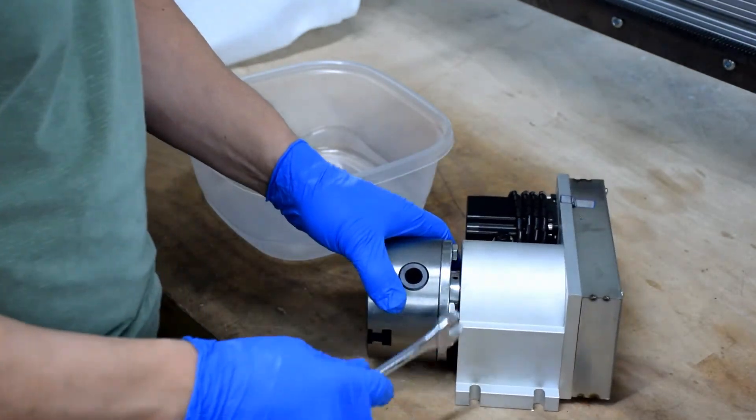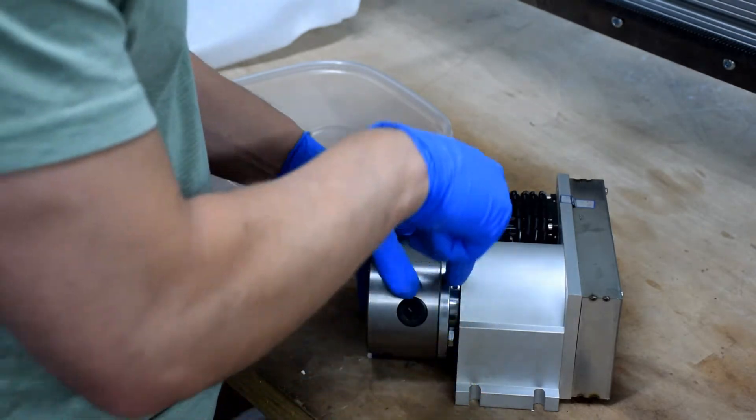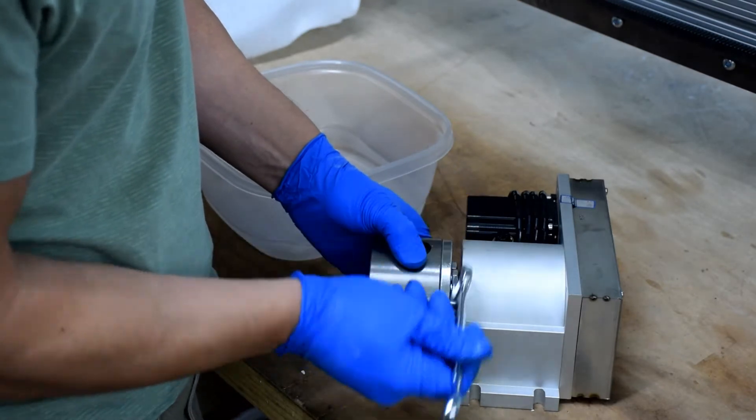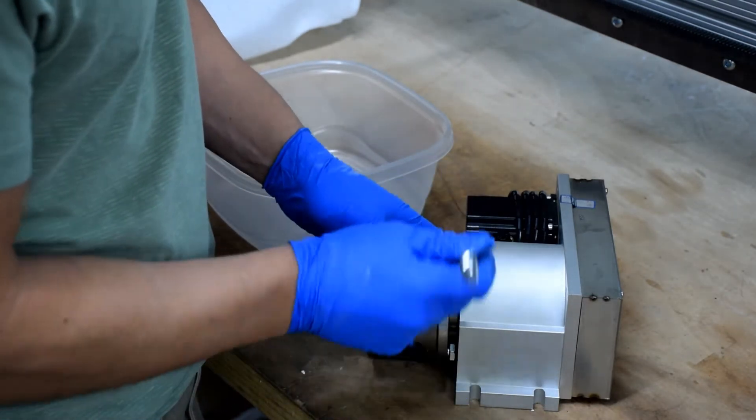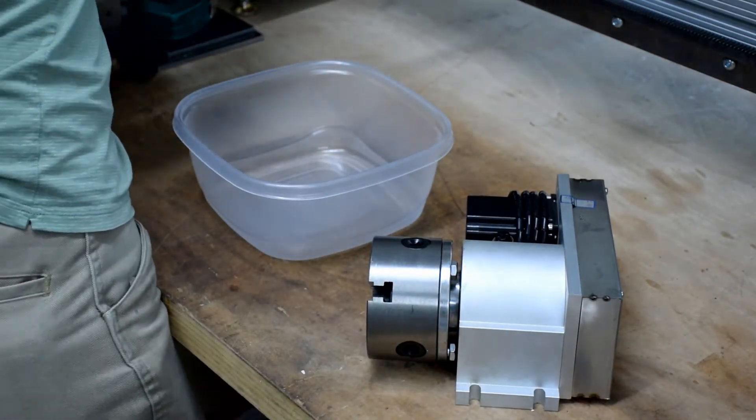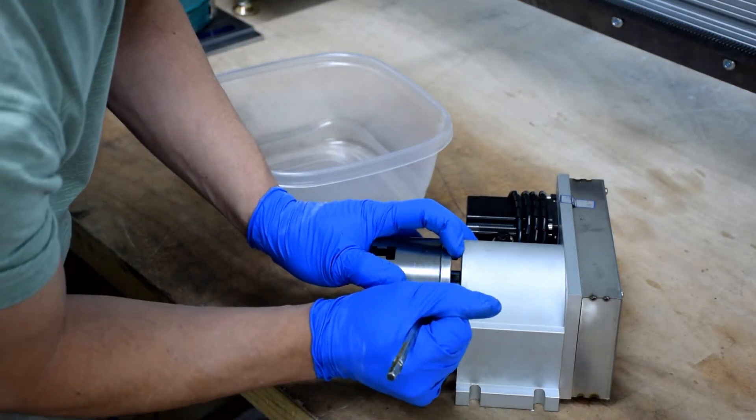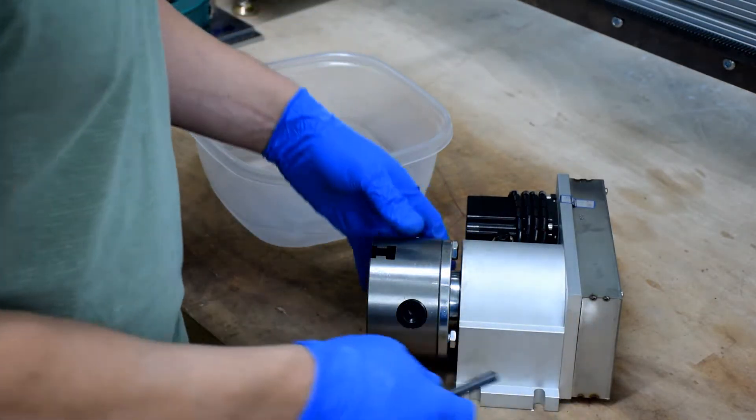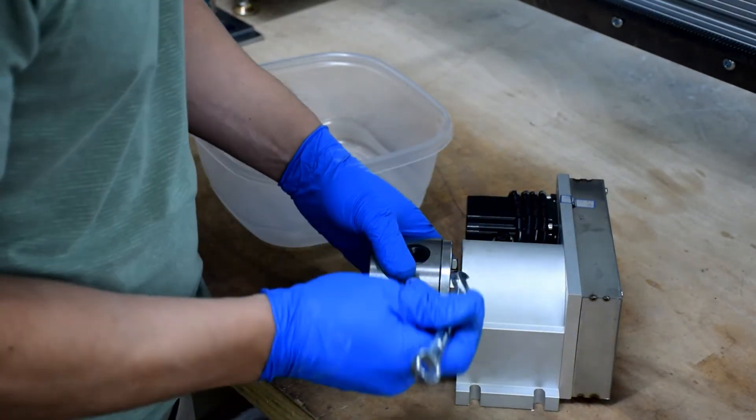After you've removed the jaws, grab a 14mm wrench. This is probably going to have to be a fixed wrench. The adjustable wrenches typically don't fit back in here. This is a little bit tedious, but easy. One thing I like to do is take a scribe and mark the back plate and the chuck, just to make sure I've got it back in the same spot. Just take the time to do that, and it should go back nice and easy.